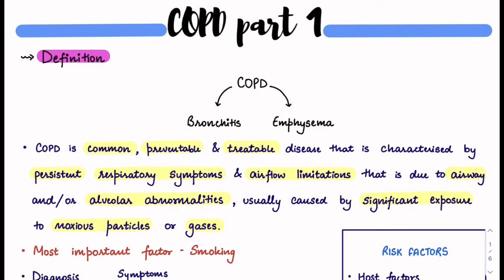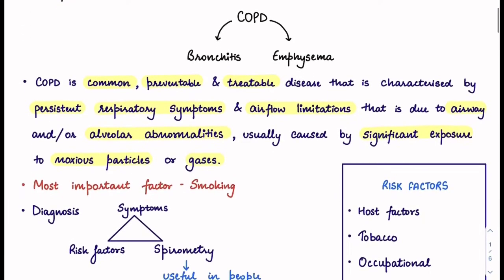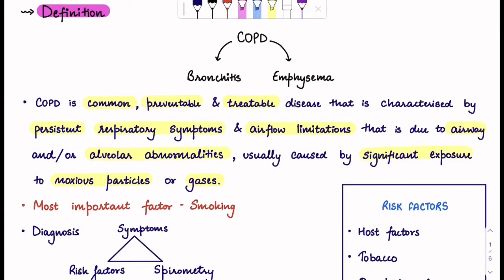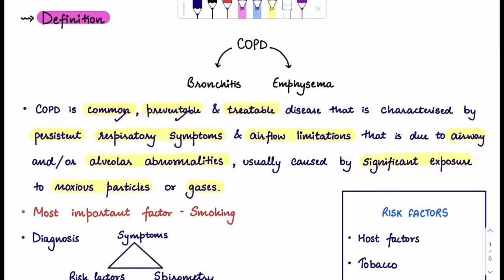Hello everyone. Our topic for today is COPD, that stands for Chronic Obstructive Pulmonary Disease. Let me start with the definition of COPD first. COPD is a common, preventable, treatable disease that is characterized by persistent respiratory symptoms and airflow limitations due to airway and/or alveolar abnormalities, usually caused by significant exposure to noxious particles or gases. You need to remember that COPD has two parts: bronchitis and emphysema. We will study about each of them individually.